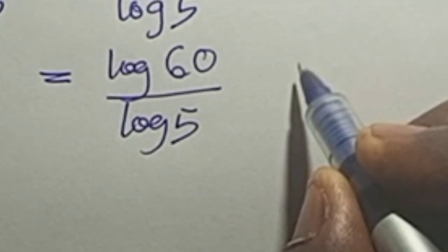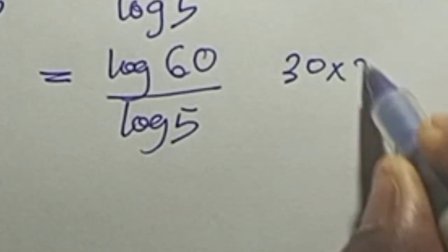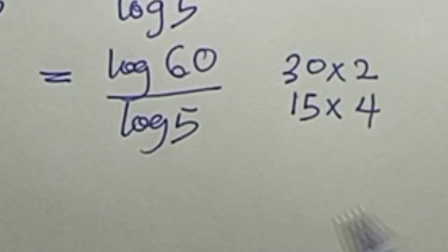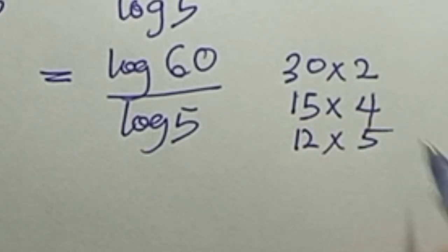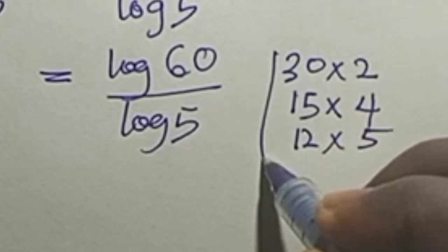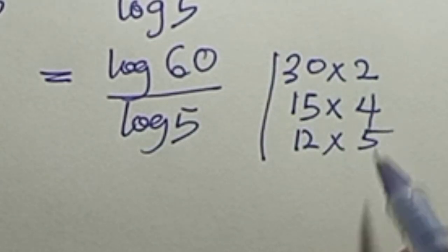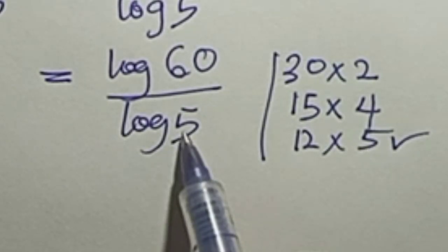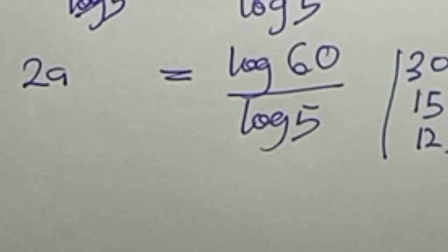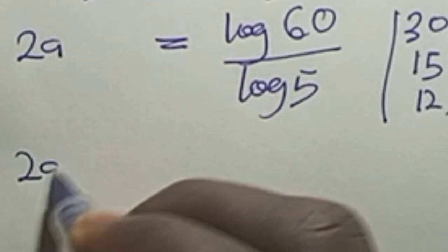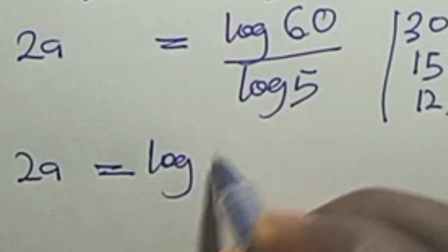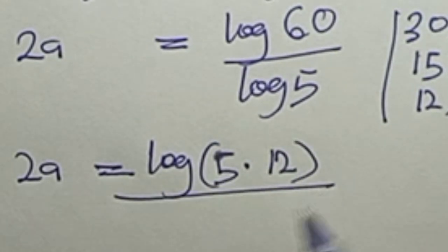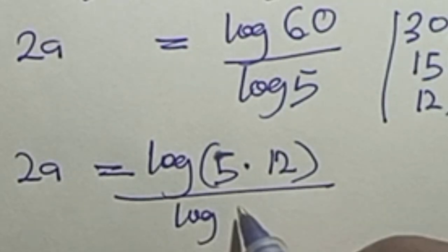Now, 60 can be written as 30 times 2, or 15 times 4, or 12 times 5. We will go with 12 times 5, because we already have a denominator of 5. So our equation becomes 2a equals log of 5 times 12, all over log 5.